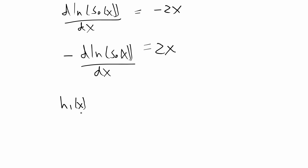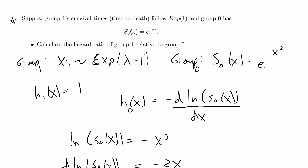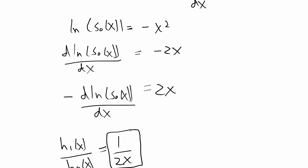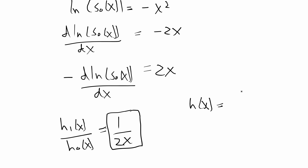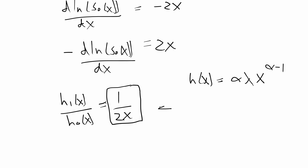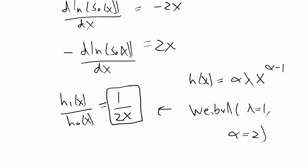So the hazard ratio h1 over h0 is equal to 1 over 2x. This survival function is actually a special case of the Weibull distribution, which has two parameters, lambda and alpha. As a general formula, the hazard function from a Weibull distribution is alpha times lambda times x to the alpha minus 1. In this case, we have lambda equal to 1 and alpha equal to 2, which matches our result. That completes the second problem.